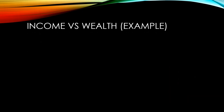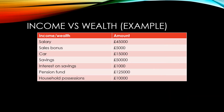Let's take a look at the income and wealth table for a worker who has earned a salary of £45,000 with a sales bonus of £5,000 on top. They have a car worth £15,000 and savings of £50,000. In the last year they earned £1,000 interest on those savings, and they have £125,000 in their pension fund. Their household possessions — TV, furniture, and so on — total around £10,000.